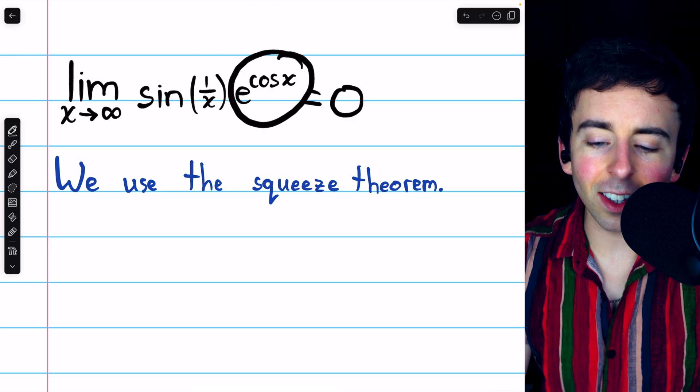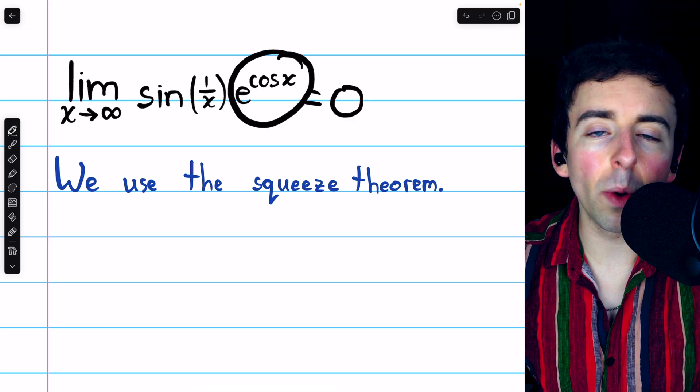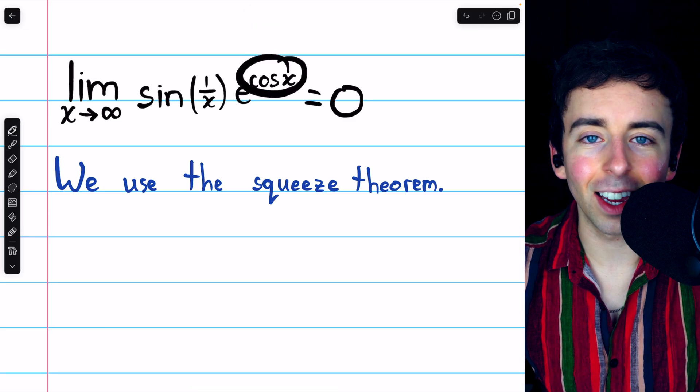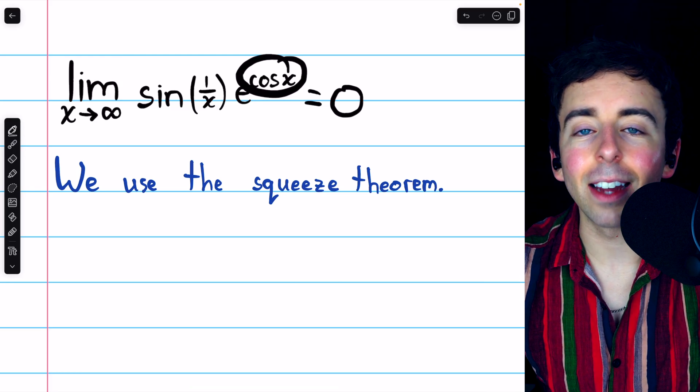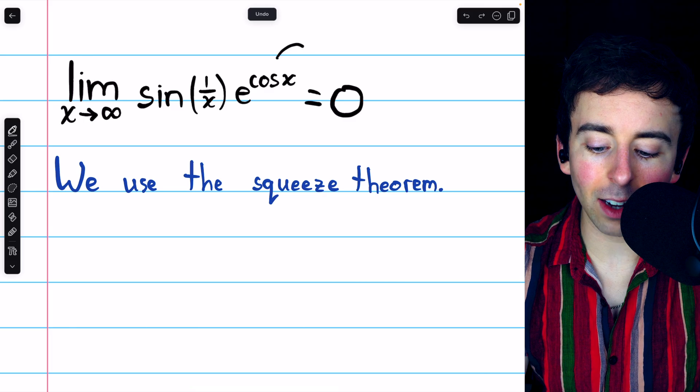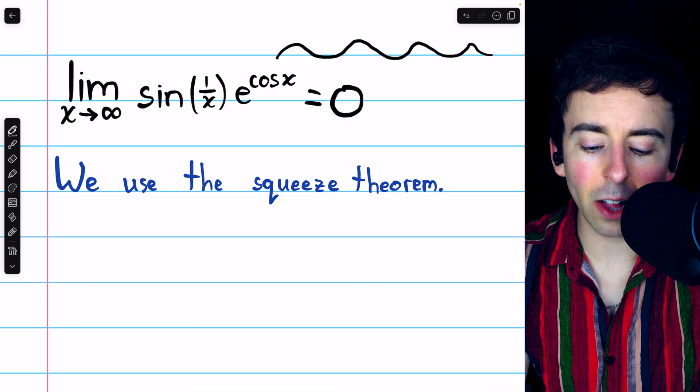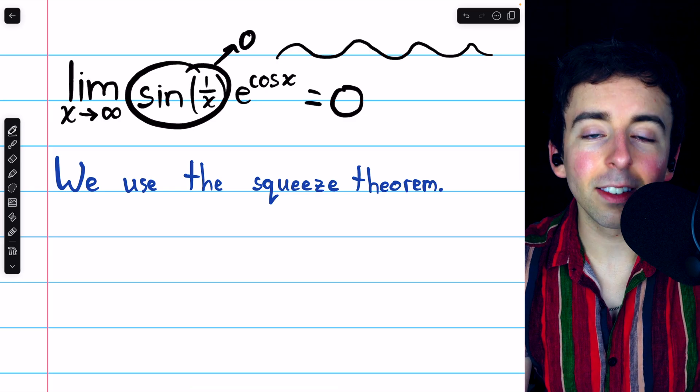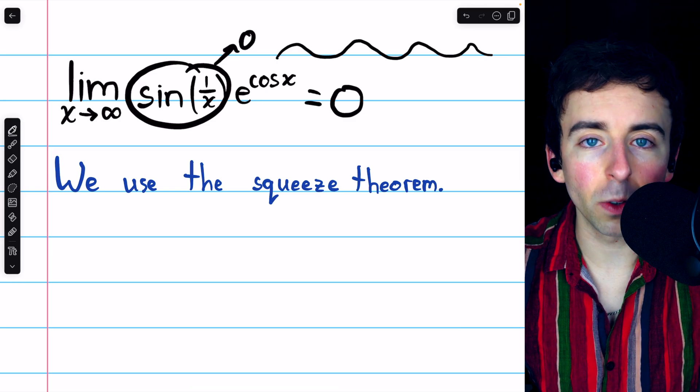while e to the cosine x is just going to oscillate, because cosine x oscillates between negative 1 and positive 1. So in the end, we would just have e to the cosine x, which is staying between two values, and sine of 1 over x is going to approach zero, thus the whole thing is going to approach zero.